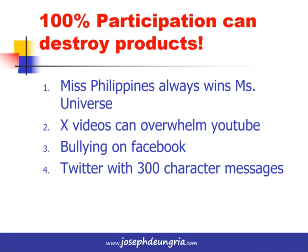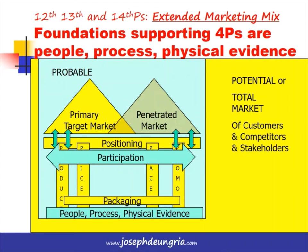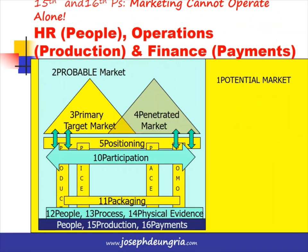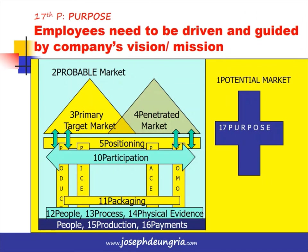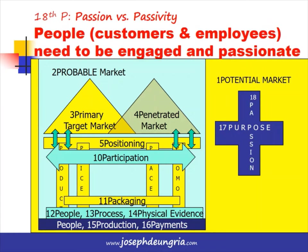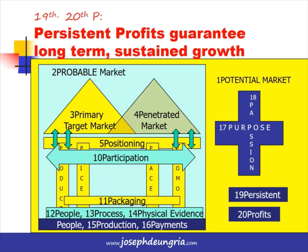The 12th, 13th, and 14th Ps — people, process, and physical evidence — are like foundations that support the 4Ps; they are the extended marketing mix supporting the traditional 4Ps. Marketing cannot do it alone — it needs other functions: people or HR, production or operations, and finance to make this a complete business process. The 17th P is Purpose. Employees need to be driven and guided by the company's vision and mission, and if employees are engaged and passionate about that purpose, it will guarantee persistent profits for the long term.